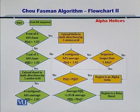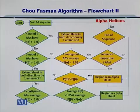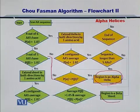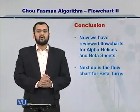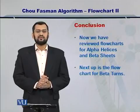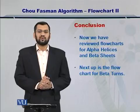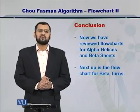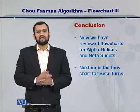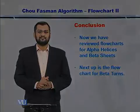In this way, you can continue calculating alpha helices from the sequence until you arrive at the end of the sequence. Once the sequence finishes, you can have the alpha helices and the beta sheets ready. In conclusion, by combining the flowcharts for the alpha helices and beta sheets, you have now evaluated the Chou-Fasman algorithm and its working towards predicting secondary structures from protein sequences. The only thing that is left is the beta turns.